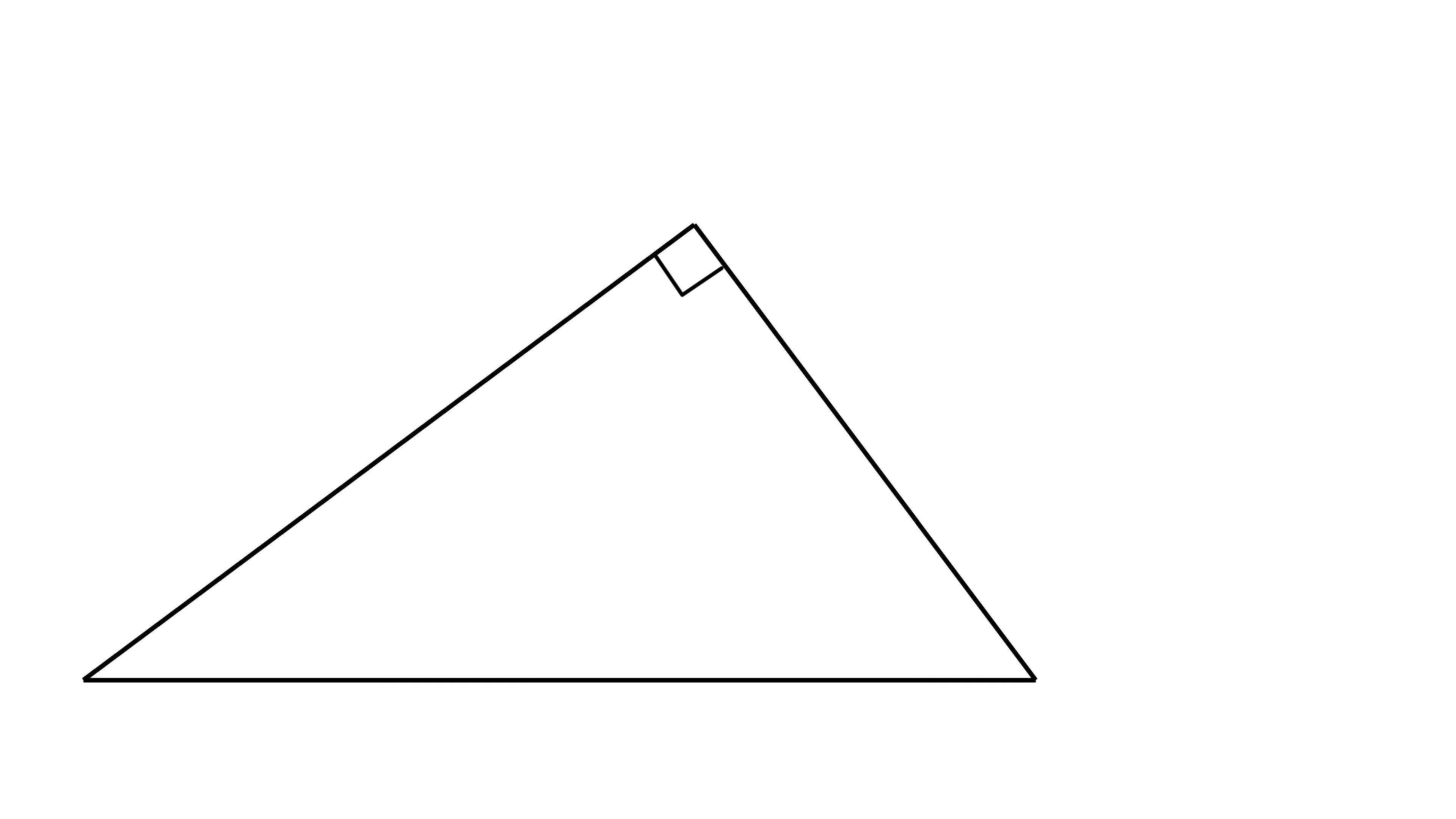We are given a right-angled triangle like this. Now, a perpendicular is dropped from this vertex of the right angle upon the hypotenuse, such that it divides the hypotenuse into two segments of 9 and 16 units, respectively.